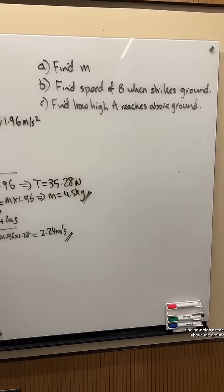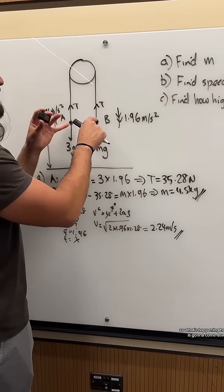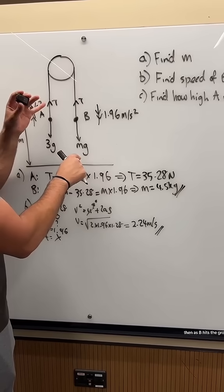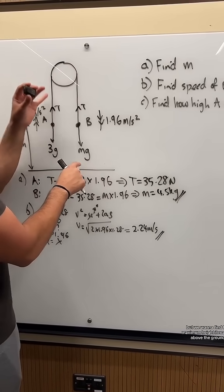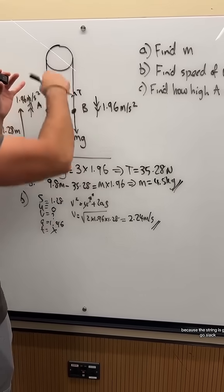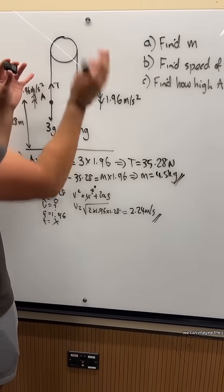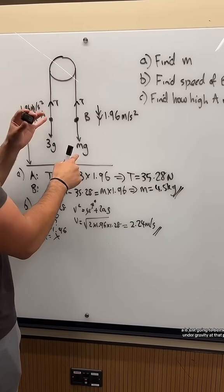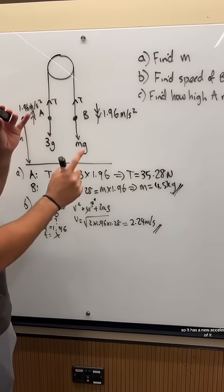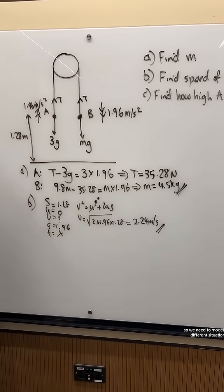Now, part C. Find how high A reaches above the ground. So what's happening here is B is going to come down, A is going to go up. Then as B hits the ground, A is going to continue going up, then it will come back down. But we want to find the maximum height it reaches above the ground because the string is going to go slack. As B hits the ground, A is going to continue on its own. We can imagine the string, nothing happens. Now when that happens, A is just going to be moving under gravity at that point. So it has a new acceleration of just moving freely under gravity. So we need to model this different situation.